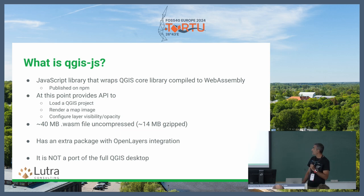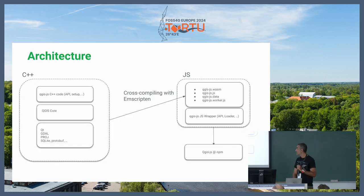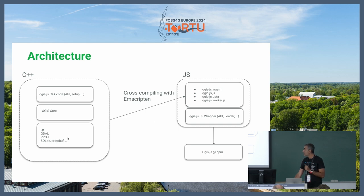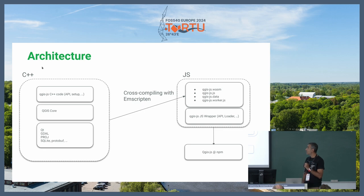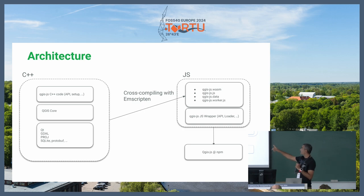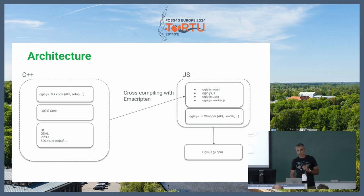A bit of background about the architecture. You have C++ code which is QGIS core, and in addition you have Qt, GDAL, PROJ, and other dependencies like Protobuf and SQLite. We developed the QGIS JavaScript C++ code, which wraps around QGIS functionalities in C++. Then you can expose it to JavaScript through cross-compilation, which creates JavaScript libraries with OpenLayers. It then creates an NPM package so you can download it and access those functions.